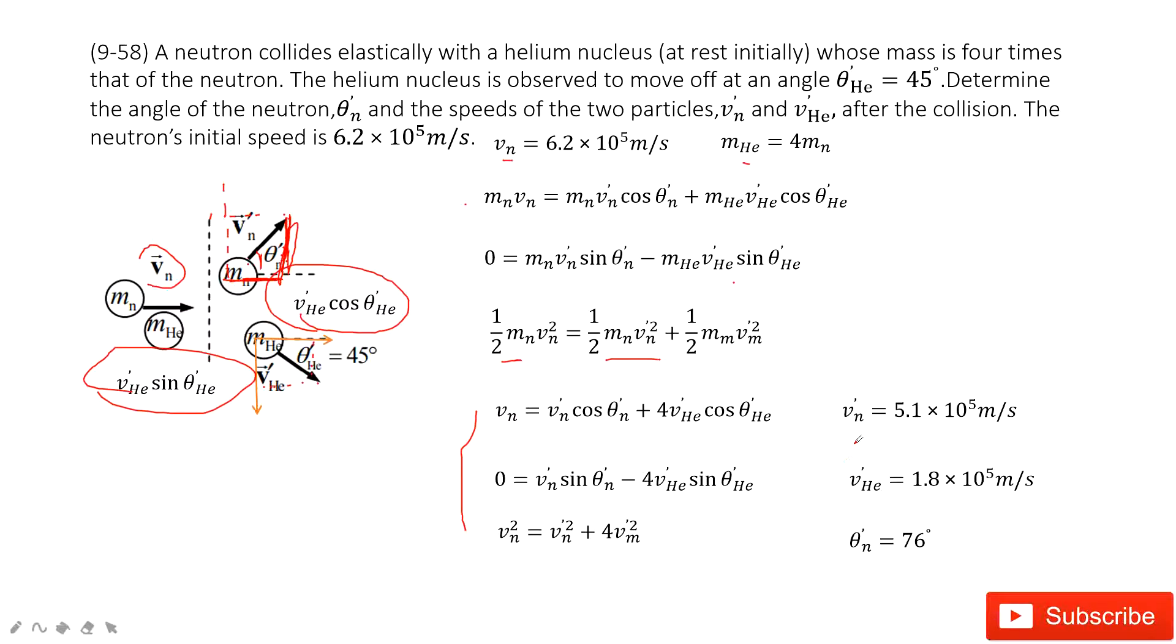Now we can find the final answers Vn plus, V helium plus, and theta n plus by solving these three equations. You can see these three equations, three quantities unknown, and three equations. So you can solve it very easily. Thank you.